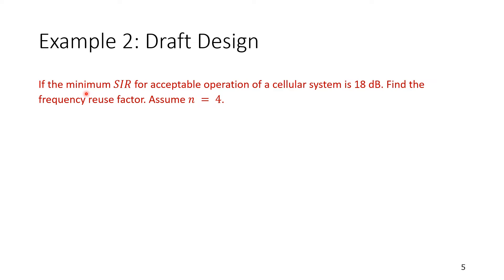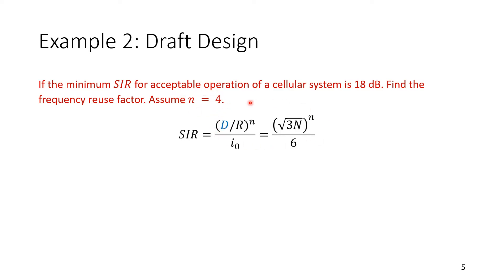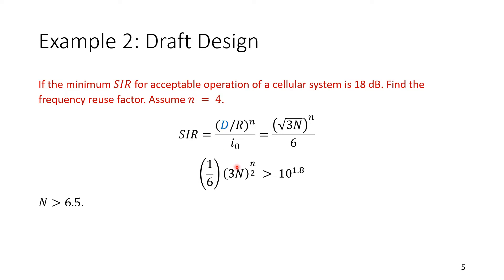Let's apply the rough SIR equation to a draft design. The question states: if the minimum acceptable SIR for a cellular system is 18 dB, find the frequency reuse factor assuming path loss exponent n = 4. We start with SIR = (D/R)^n / 6, where the 6 comes from assuming capital N = 7. With small n = 4, SIR = 18 dB, which must be converted to linear scale — a common mistake to avoid.